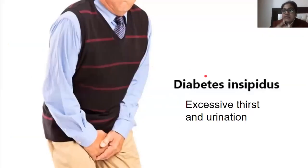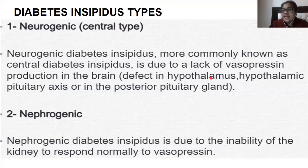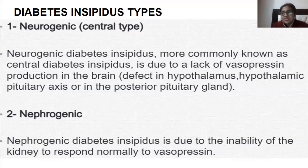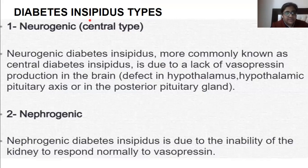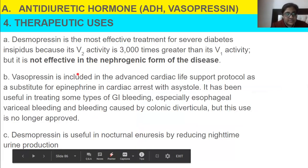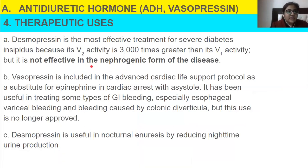There are two types of diabetes: diabetes mellitus and diabetes insipidus. Diabetes insipidus involves excessive thirst and increased urination. There are two types of diabetes insipidus: the central type, which is neurogenic, and the nephrogenic type. Desmopressin is not effective in the nephrogenic form of the disease.